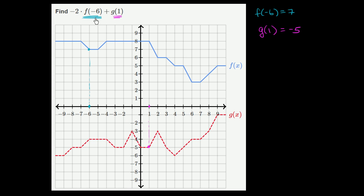This statement simplifies to negative 2 times f of negative 6, which is 7, so times 7, plus g of 1, which is negative 5, so plus negative 5.